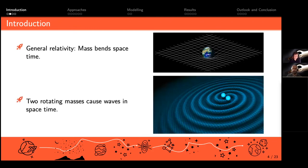If you have two masses rotating fast around each other, they will form waves in space-time which are called gravitational waves, and these are the ones we want to detect.